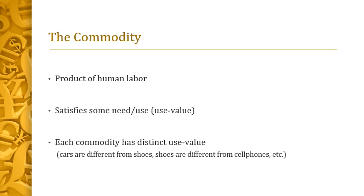This is what Marx calls an object's use value. Every commodity has a distinct use value — every commodity is used for something different. Cars are used for one thing, shoes for something different, cell phones for something different. Their use values are all distinct from each other.